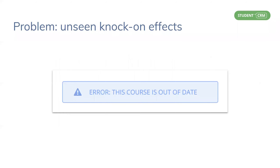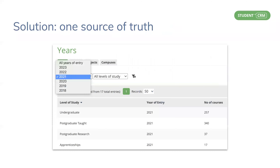The unseen knock-on effects of a simple course change can often surface well after the change occurred. And this leads to checking and double-checking all the time, and then unpicking the problems detected afterwards when and if they are spotted at all. And the solution, of course, is to have one single source of truth.